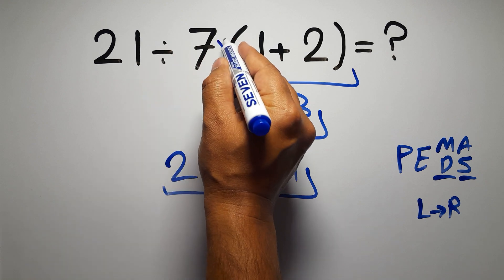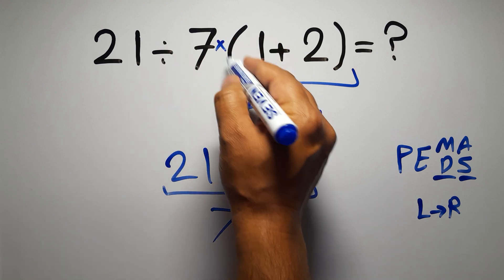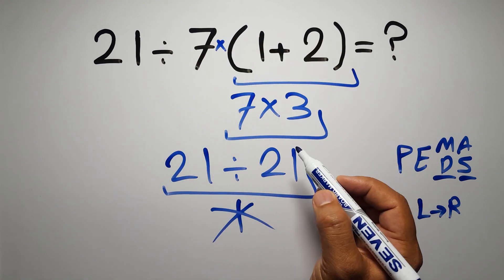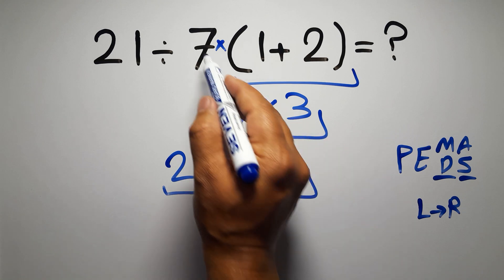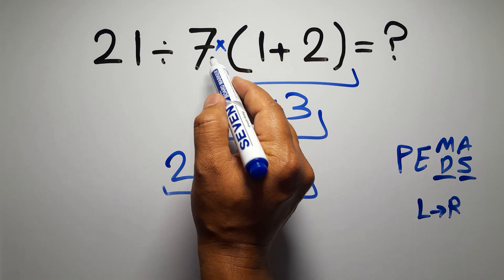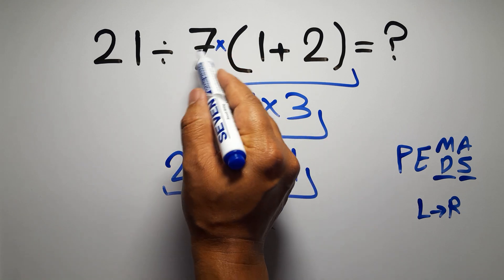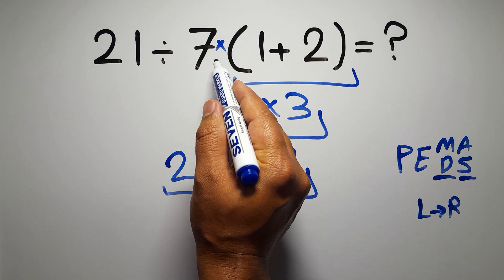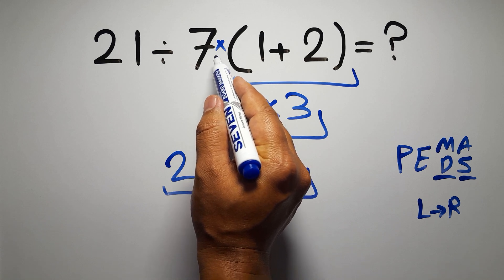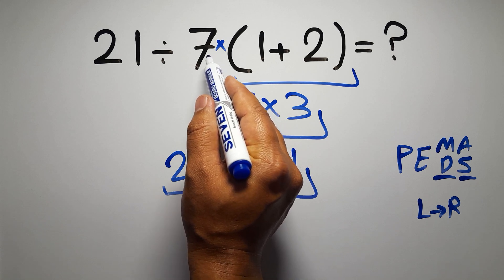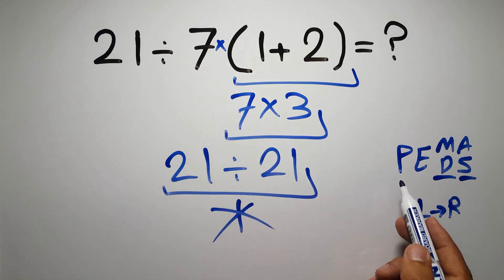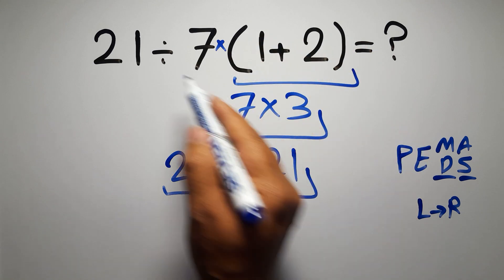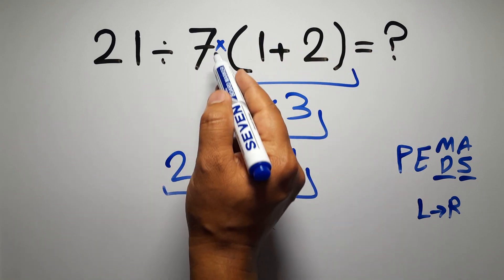...one division, one multiplication, and one set of parentheses. Inside these parentheses we have one addition. Here we have a multiplication, because in mathematics when a number is placed next to parentheses it means multiplication, and we usually don't write the multiplication sign for brevity. So according to PEMDAS, first we have to do the parentheses, then the division...